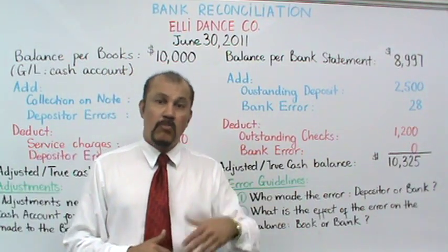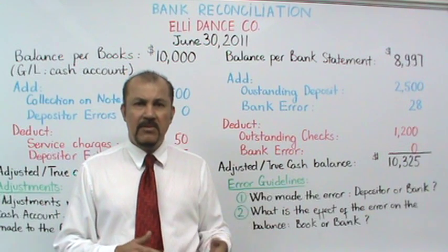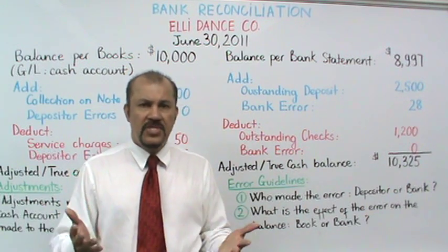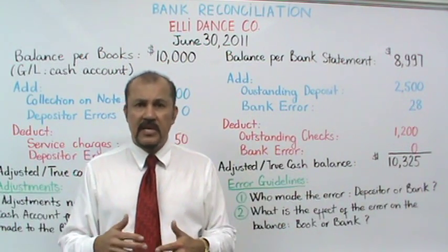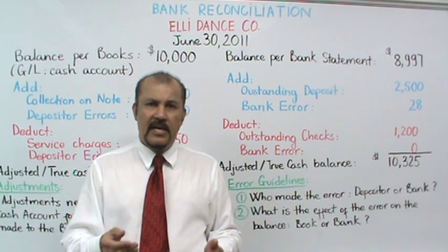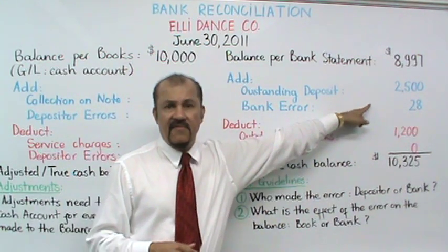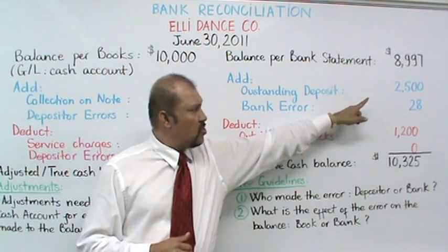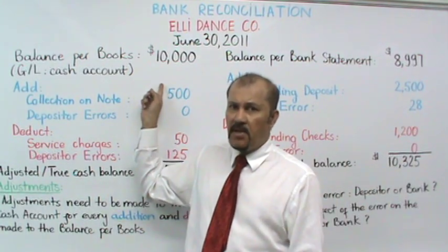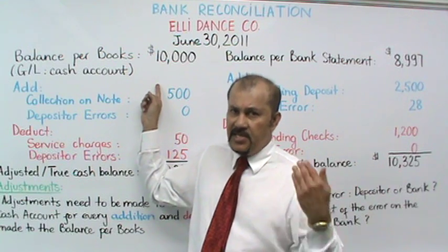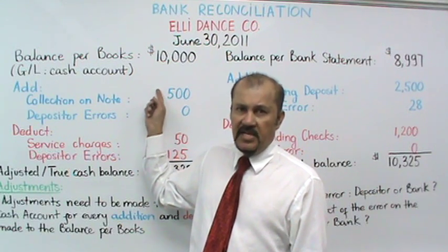What is an outstanding deposit and why are we adding it? In this case, it's in the amount of $2,500. Let's assume that L.E. Dance Company received a check from a customer on June 30th in the amount of $2,500. It came in the mail June 30th morning and L.E.'s bookkeeper immediately recorded this check in L.E.'s books, causing L.E.'s book balance to increase by $2,500.